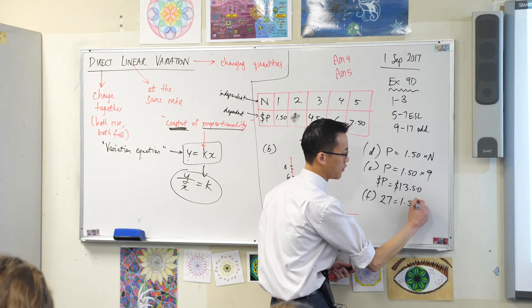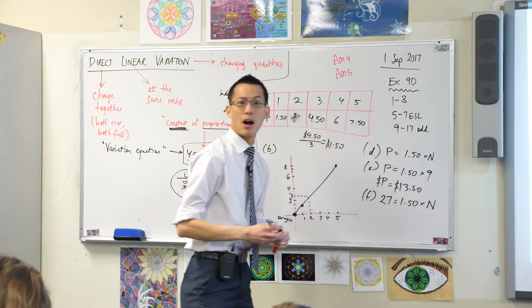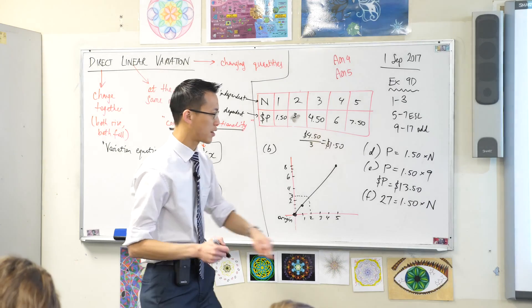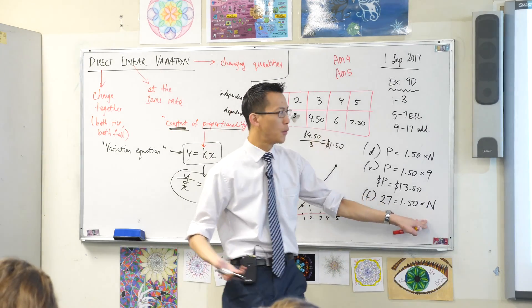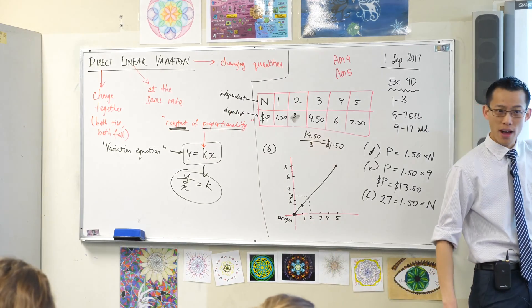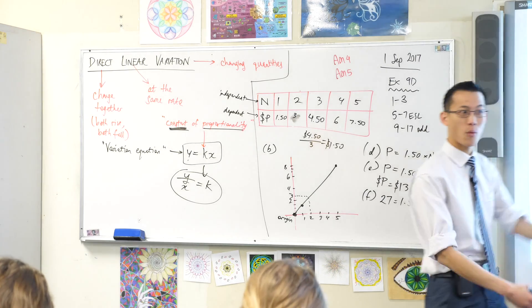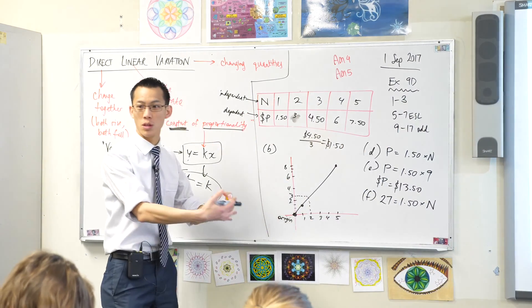27 equals $1.50 times N. One of the ways you can know that you've done this right is because you still have this pronumeral here, which is the one that you've been asked to find. Well it had better be there because I want to get a final line of N equals something or other.